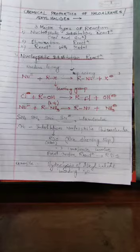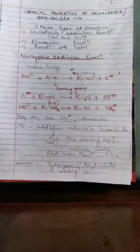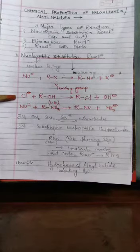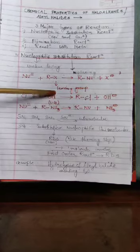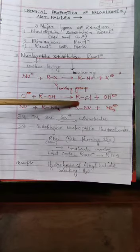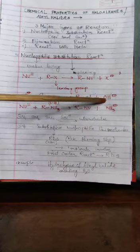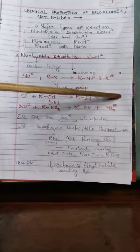Nucleophile, we will represent as Nu⁻, that reacts with alkyl halide forming R-Nu. Here X is the leaving group only. In another example, instead of Nu we are taking Cl⁻. So Cl reacts with alcohol, and here OH is the leaving group only. We are getting alkyl halide and then OH⁻, which is carrying a negative charge — that one is a nucleophile.